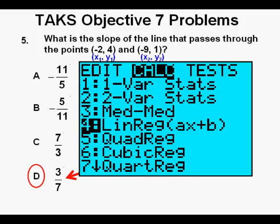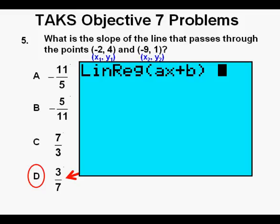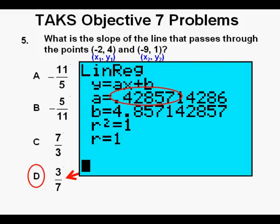Arrow down to 4 at the linear regression option, press ENTER. Press ENTER again. For the slope we get this number, .42857, etc., which is the decimal approximation of 3 sevenths, verifying our earlier answer.